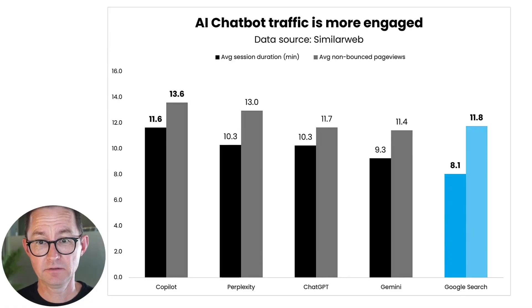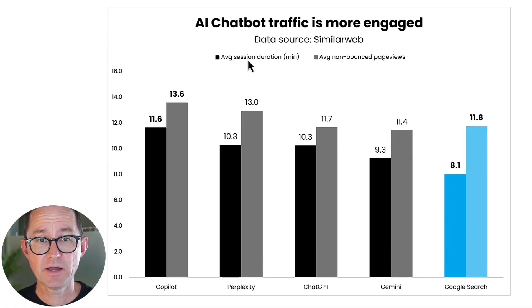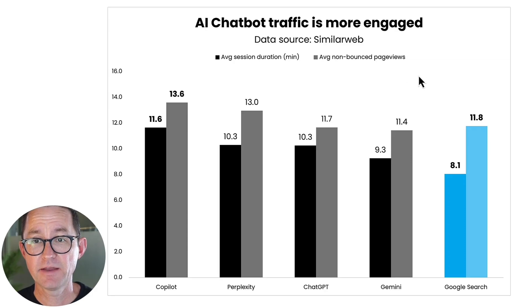Research suggests that traffic from AI is actually more engaged — visitors spend more time and have stronger intent. Look at this data from SimilarWeb shared by Kevin Indig. It looks like Copilot, Perplexity, and ChatGPT all have higher session durations and non-bounce page views than Google search. Is that true? Check for yourself. Look in your own data. Here's where to look.